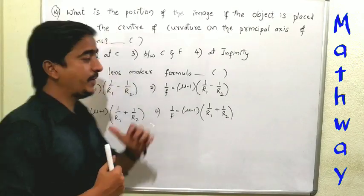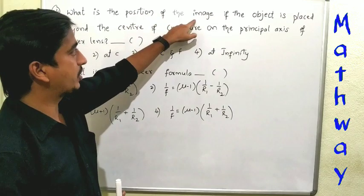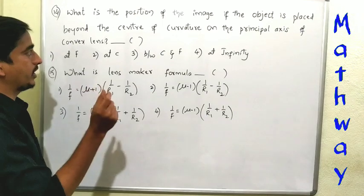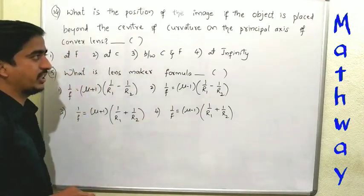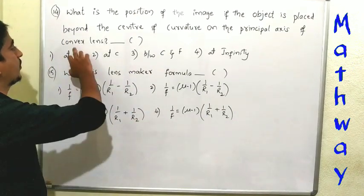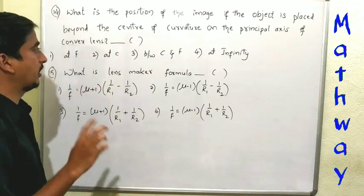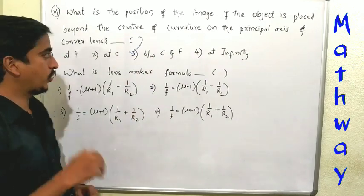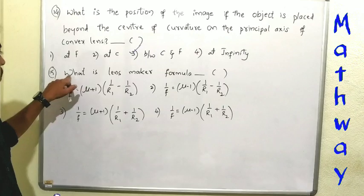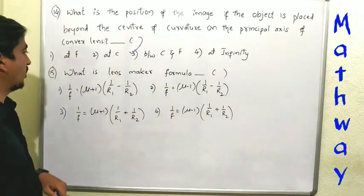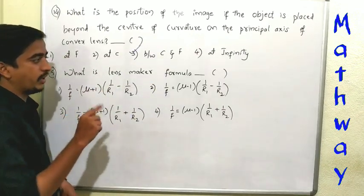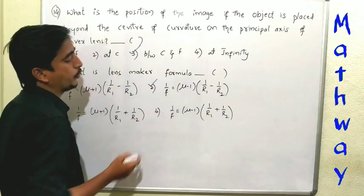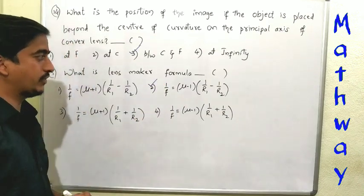Fourteenth question: what is the position of the image if the object is placed beyond the center of curvature on the principal axis of a convex lens? The image forms in between the center of curvature and the focus. Fifteenth question: what is the lens maker formula? The lens maker formula is 1 by f equal to (mu minus 1) into (1 by r1 minus 1 by r2).